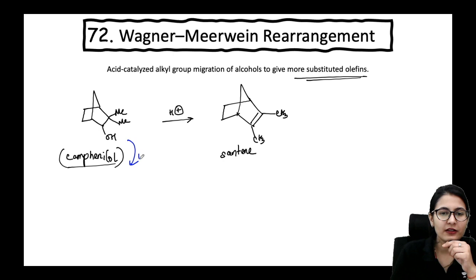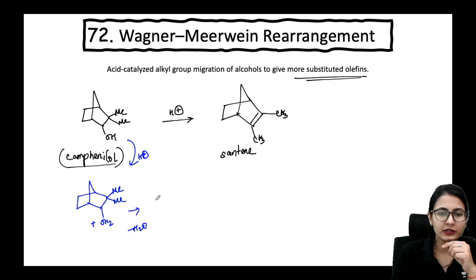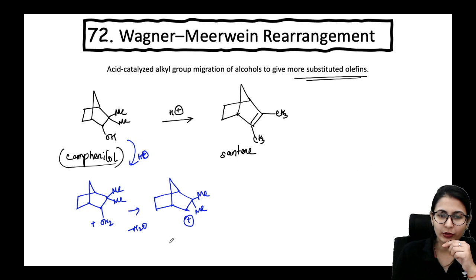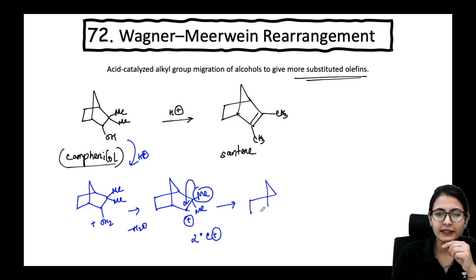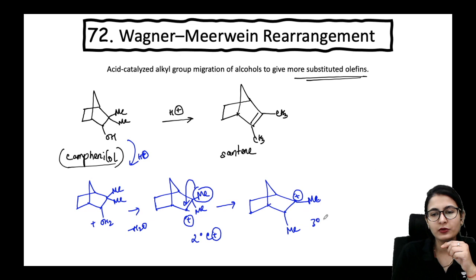So how does the rearrangement proceed? In the presence of acid H⁺, you can make the OH a good leaving group by forming the hydronium ion. OH becomes a very good leaving group — eliminate water, and the carbocation you have is a secondary carbocation. However, if one of the methyl groups migrates — say the above methyl group migrates from the 2° carbocation — you get a 3° carbocation.